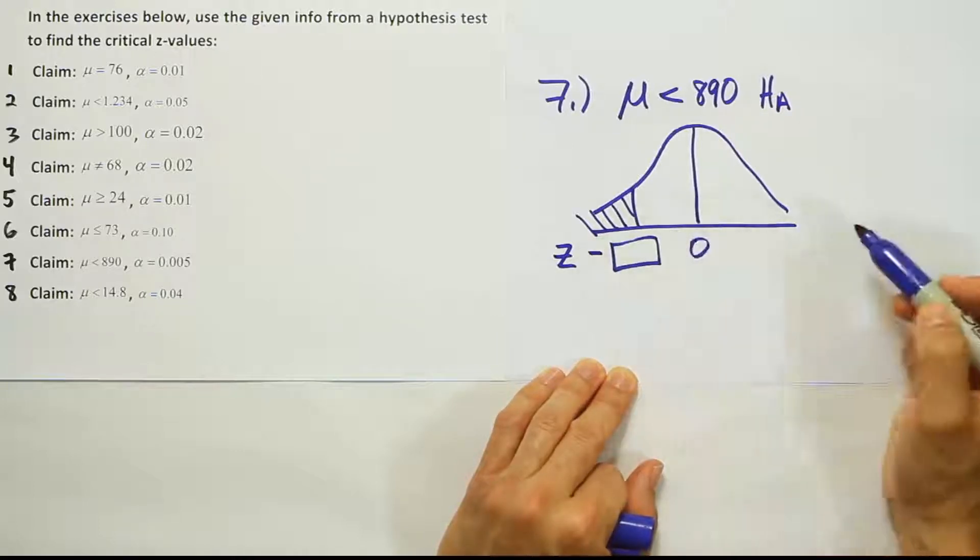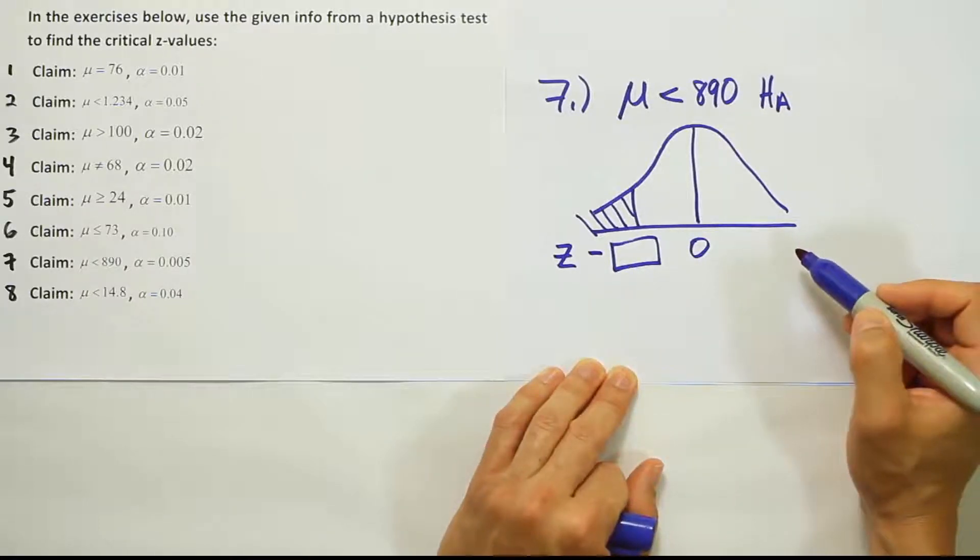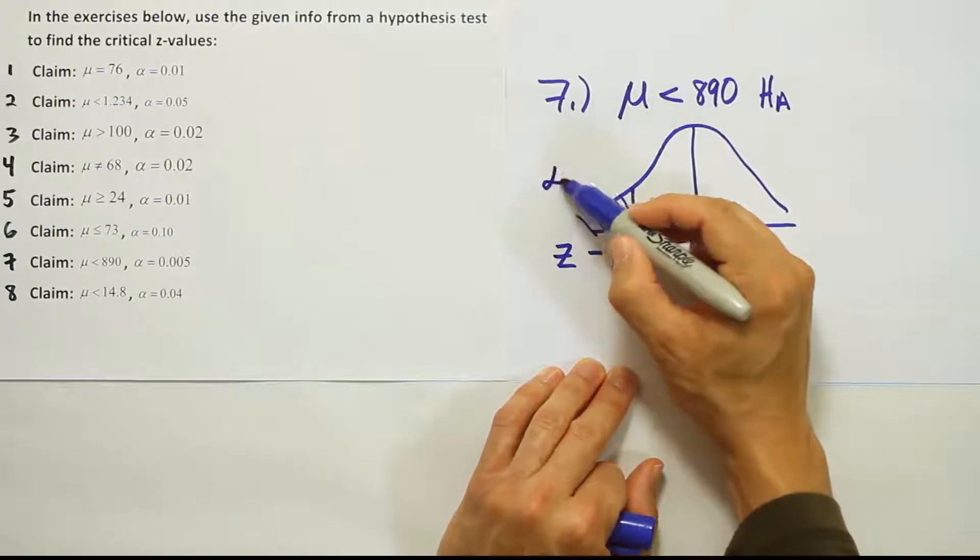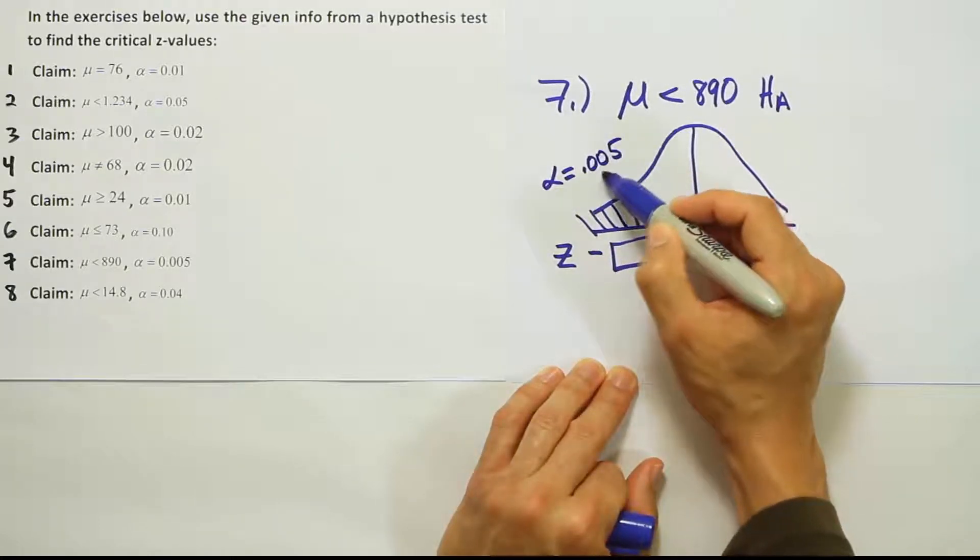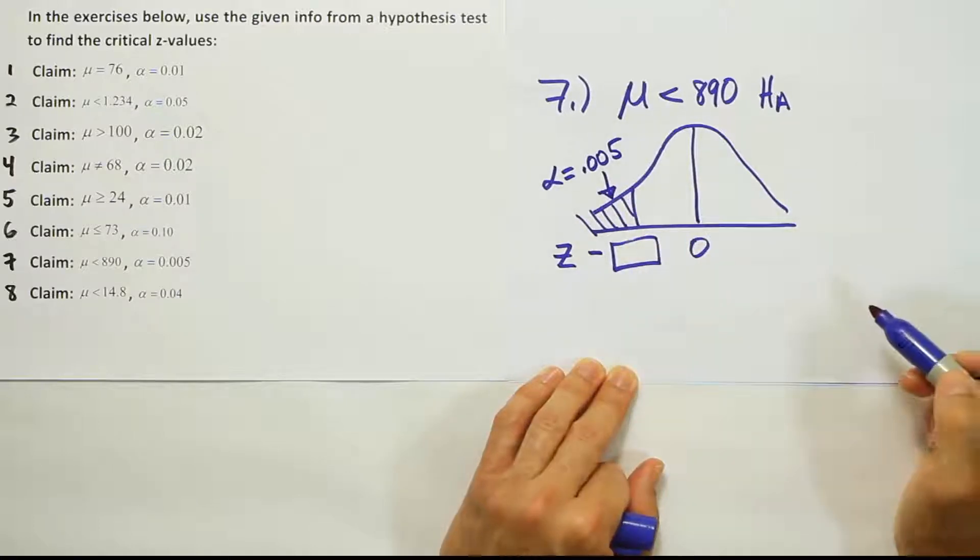Remember that the critical value on the left hand side would be negative. Now they tell us that alpha is equal to 0.005, and all of that will be located in this leftmost tail.